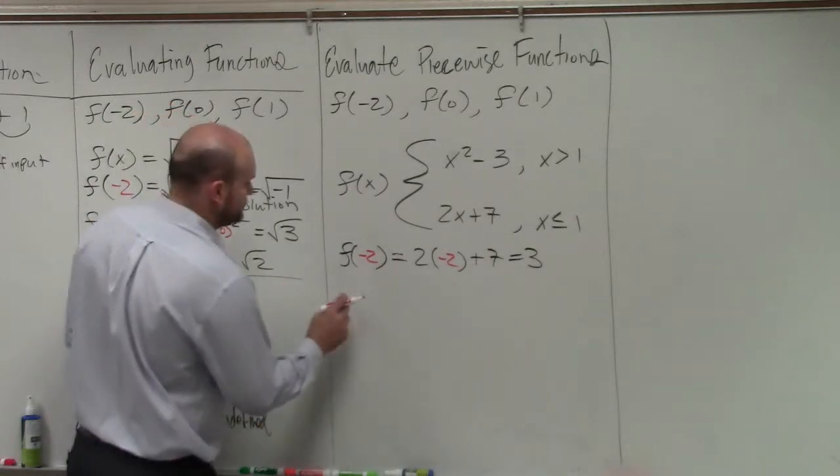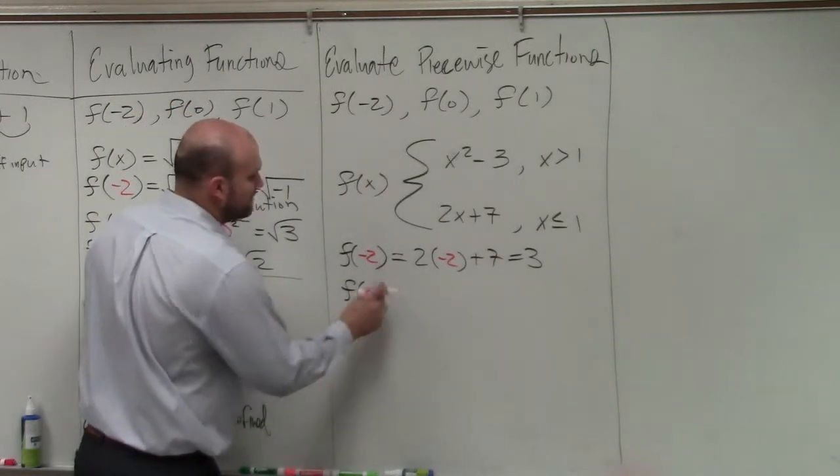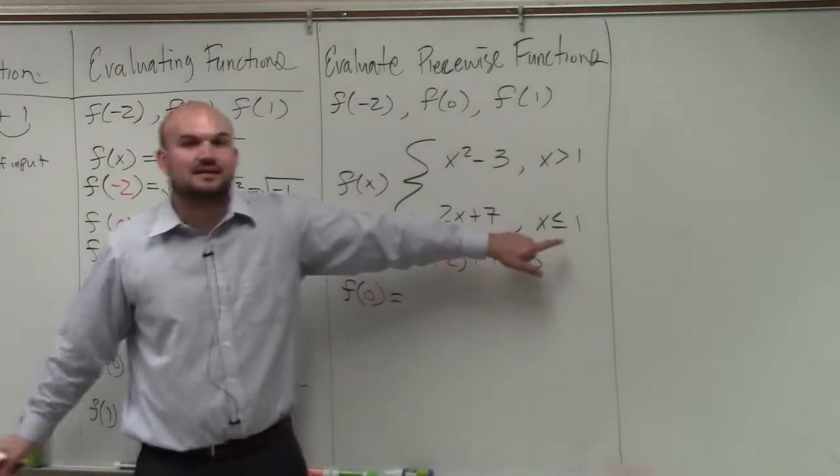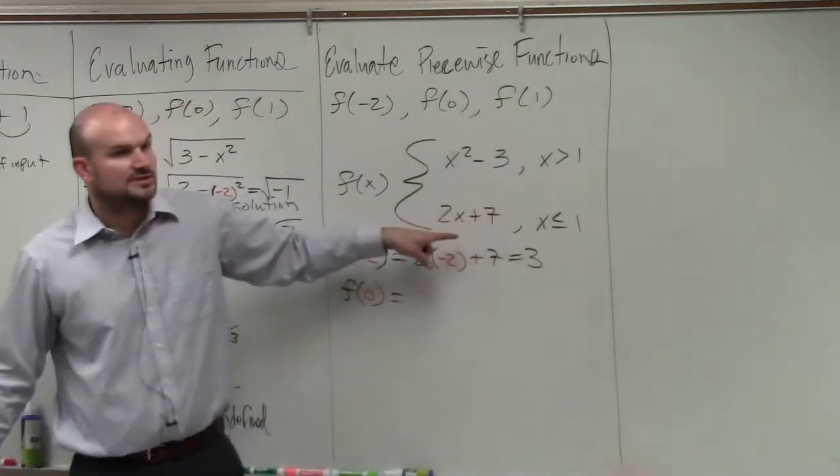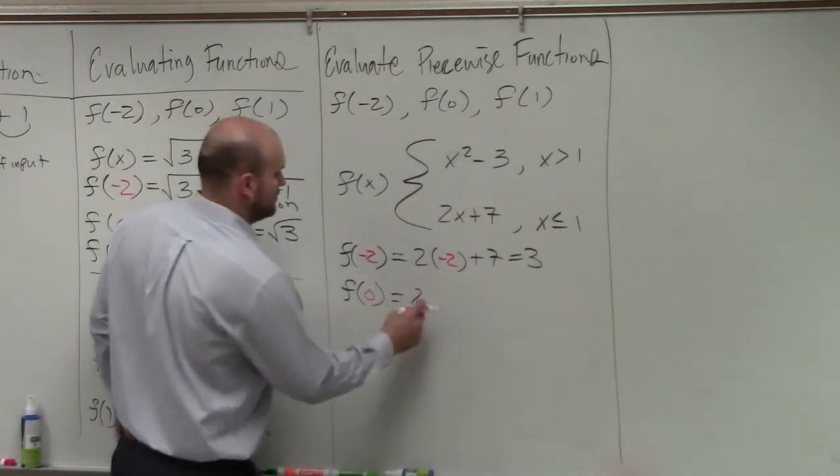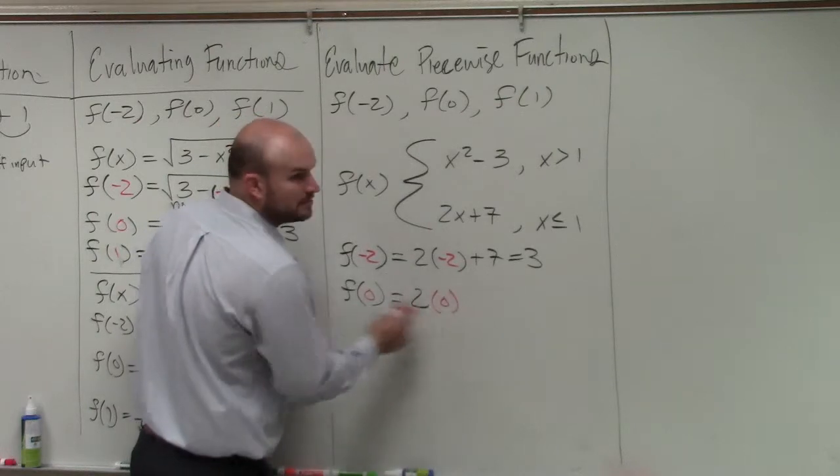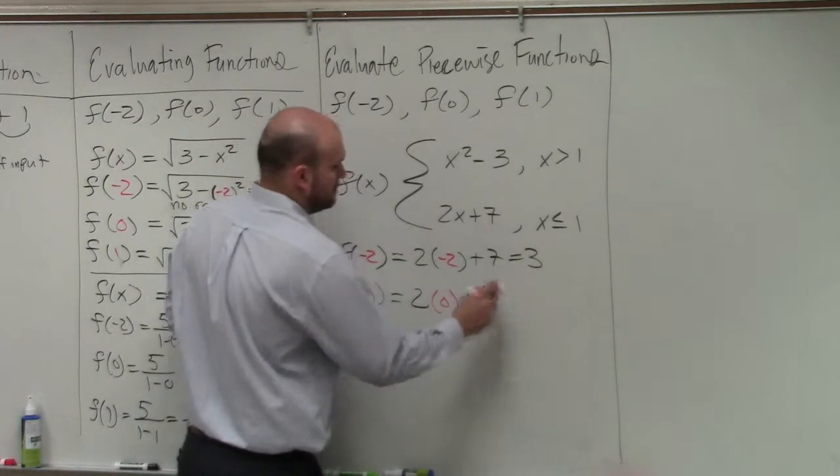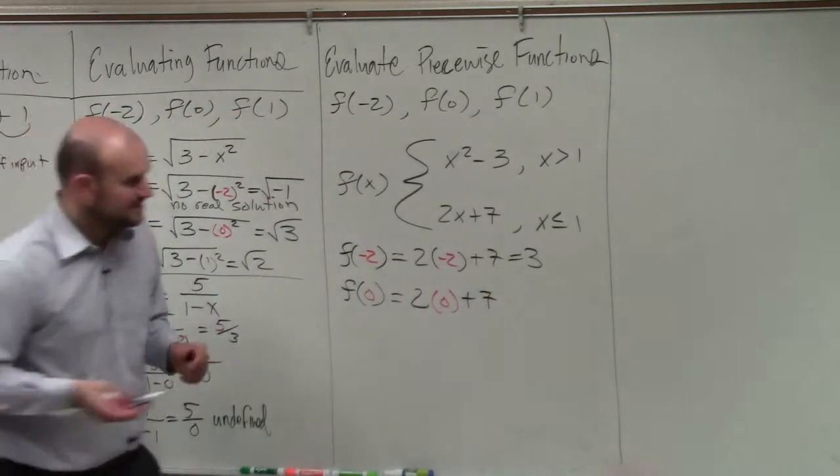Let's do the next one. f of 0. f of 0 is, again, less than or equal to 1. So we use that rule. Do you have a question? So 2 times 0 is 0, plus 7 is 7.